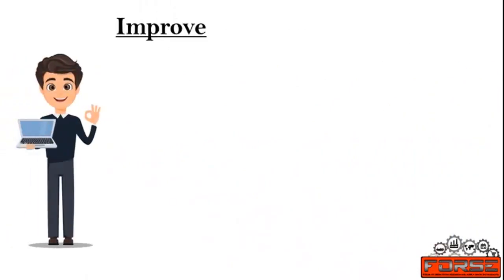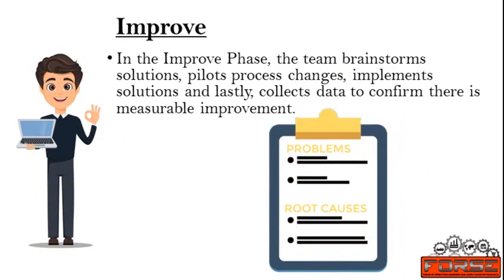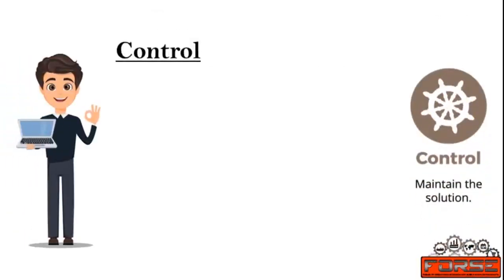Having identified these causes, he then moved on to the Improve phase. In the Improve phase, the team brainstorms solutions, pilots process changes, implements solutions, and collects data to confirm there is measurable improvement. A structured improvement effort can lead to innovative and elegant solutions that improve the baseline measure and, ultimately, the customer experience. Mr. Smith made a list of all the problems and root causes, then the subsequent action taken to improve these issues, including changes to the machinery itself and changes in the methods used by employees to feed material into the machine.